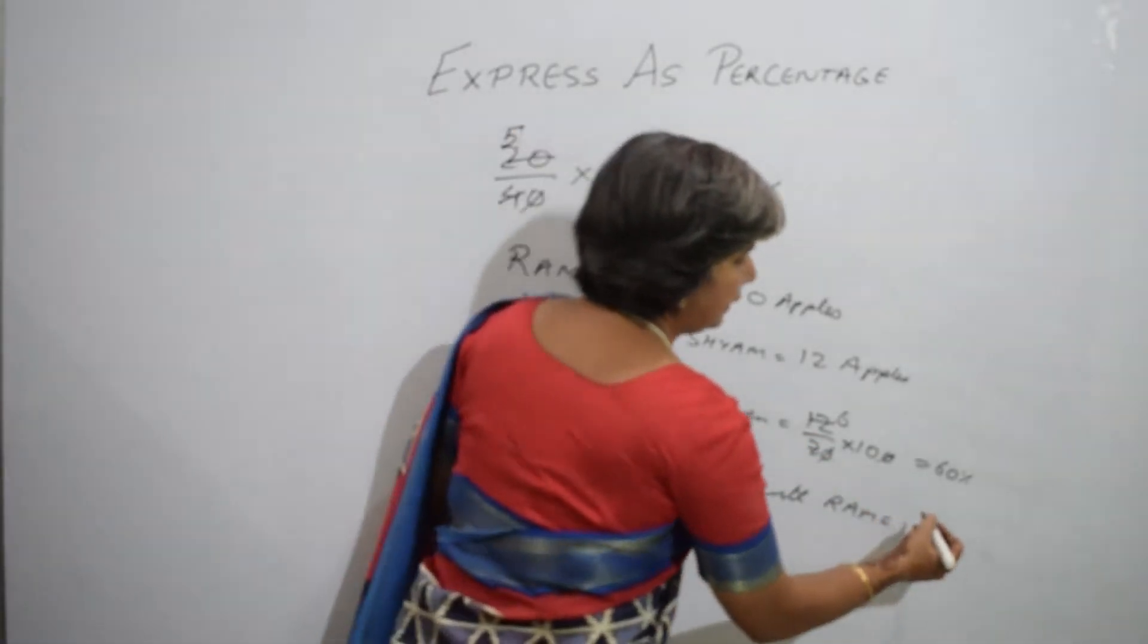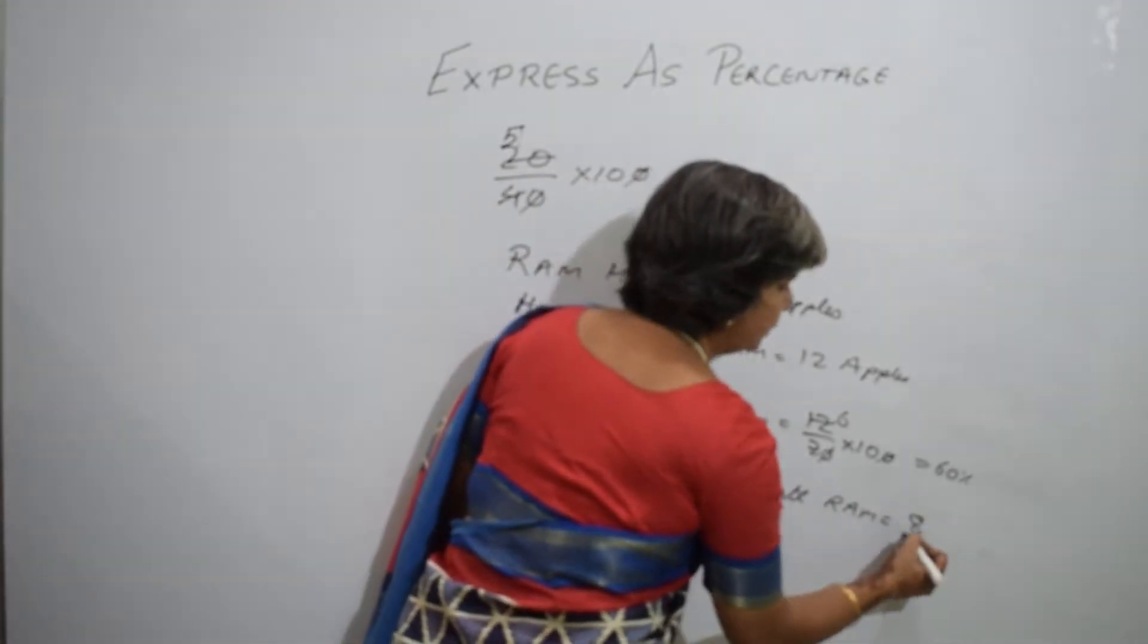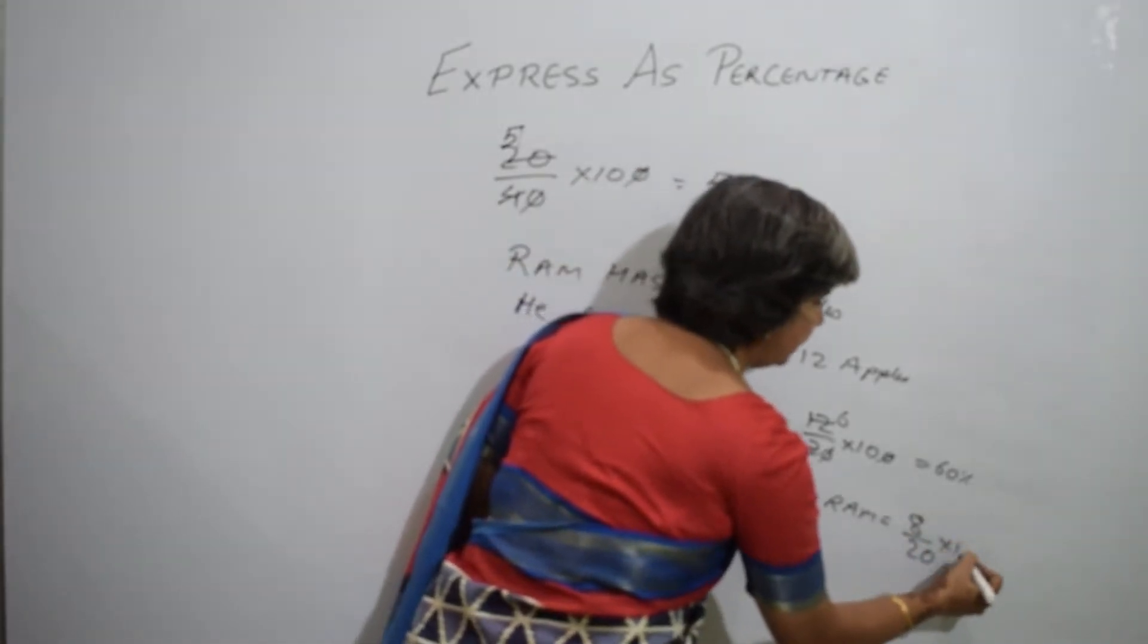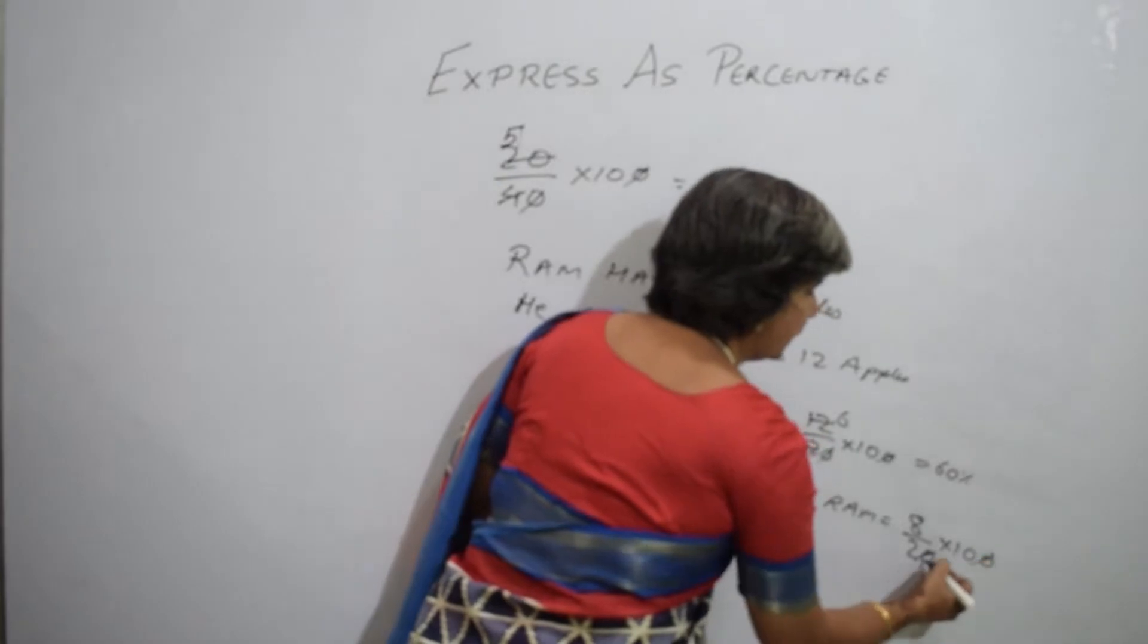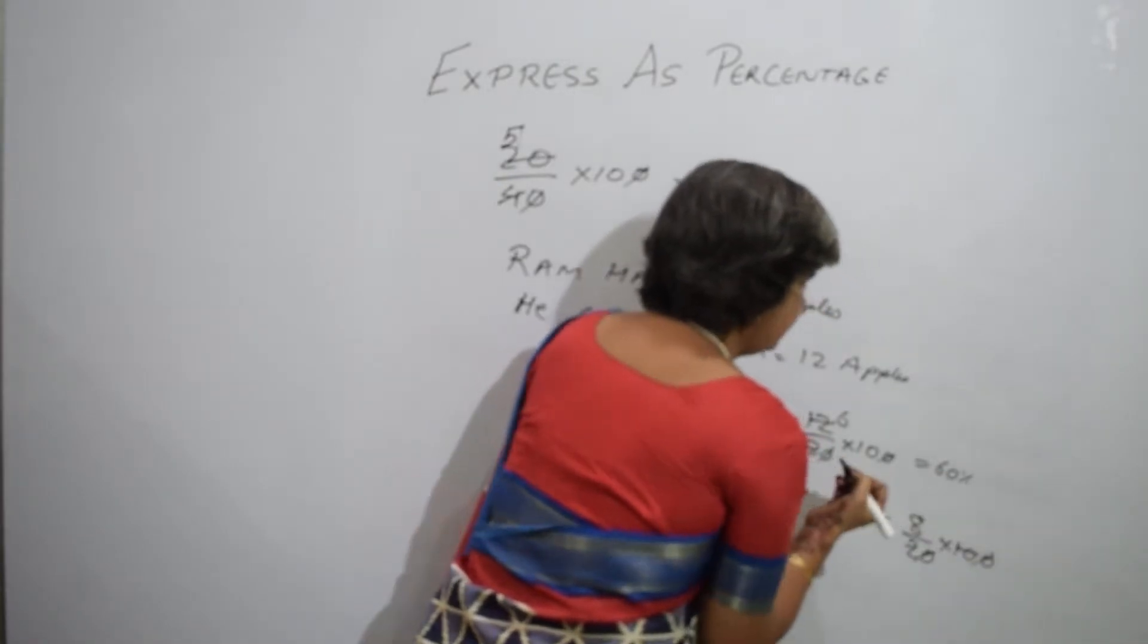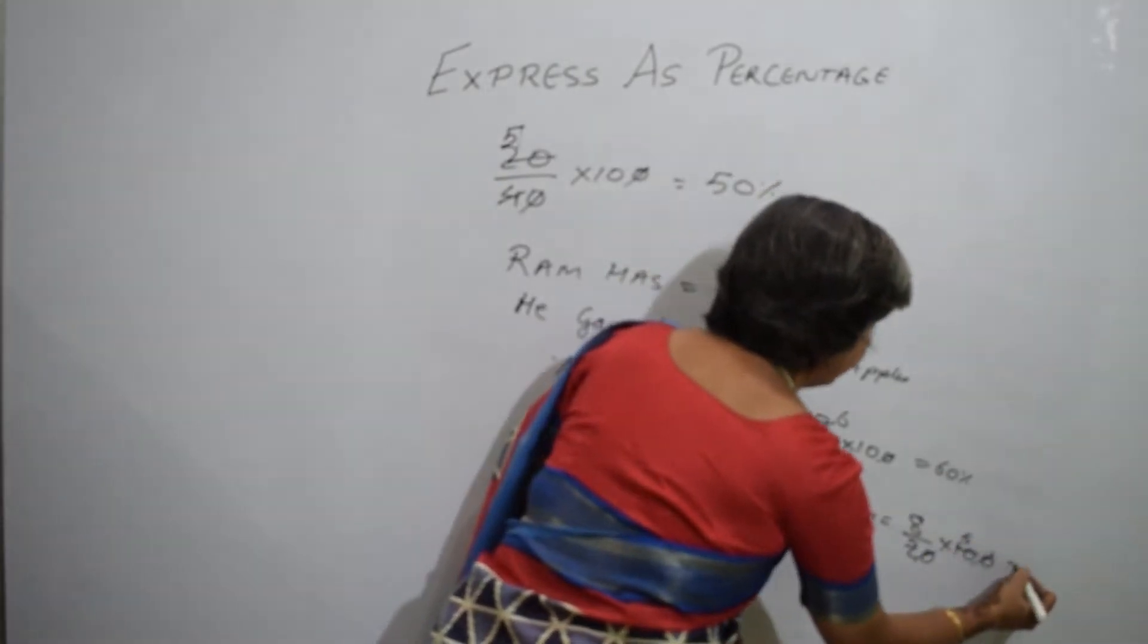he is left with 20 minus 12 that is 8 and he has 20 in all into 100. So, it will be 40 percent.